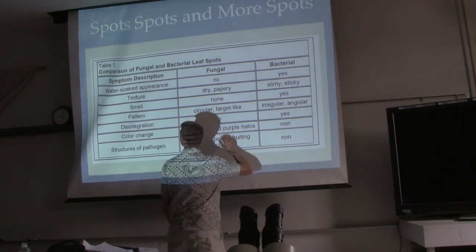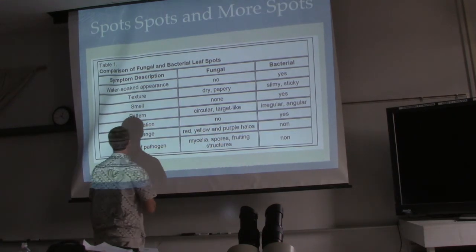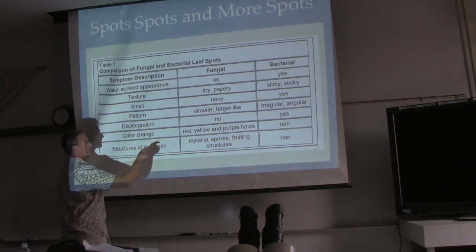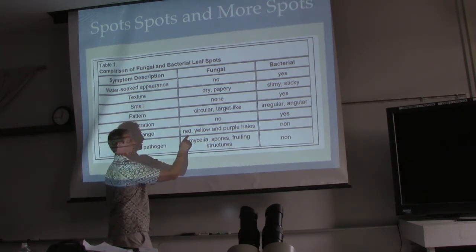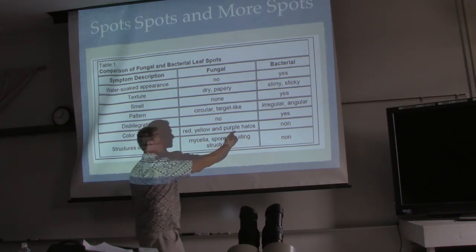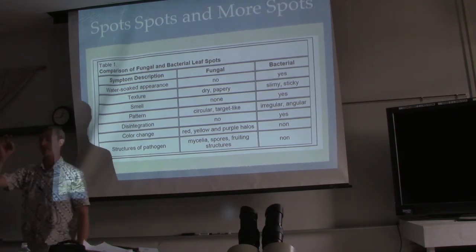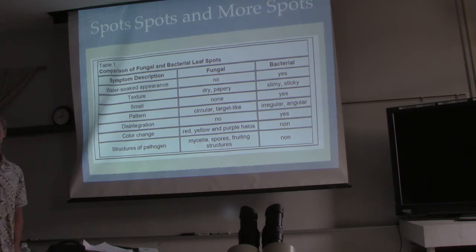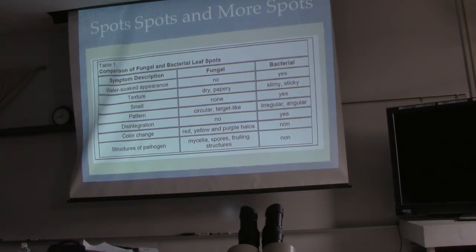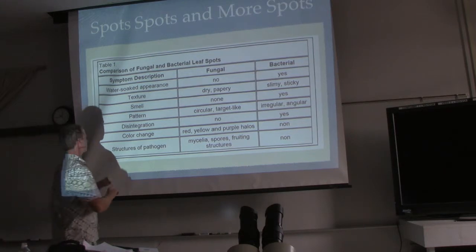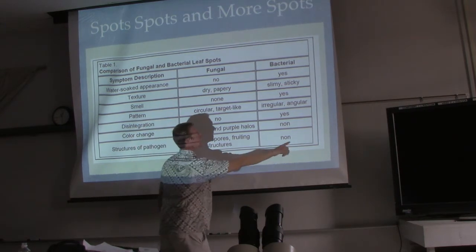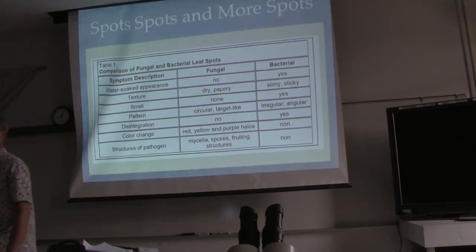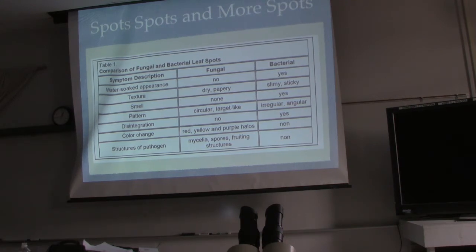Also consider color change — a red, almost always yellow, and sometimes purple halo around a spot is a good indication of fungus. If it's bad enough, a fungus can make a hole through the spot with yellowing around the outside. For structures of the pathogen: under a microscope you'd see mycelia, spores, and fruiting structures for fungus. Bacteria are so small you won't see them. If you look under a microscope and see nothing, just water-soaked leaf, it's probably bacteria.